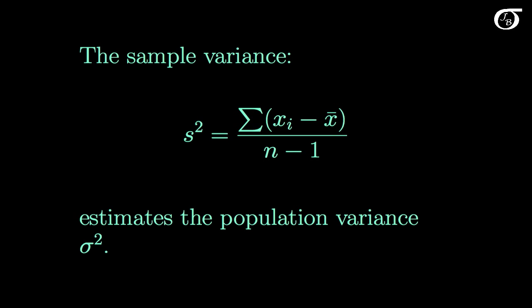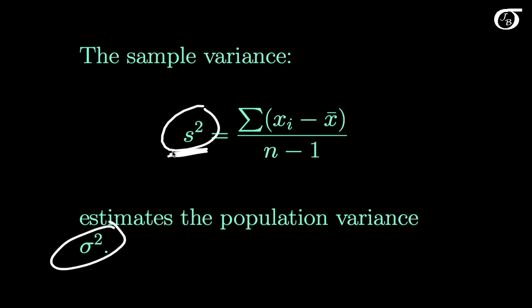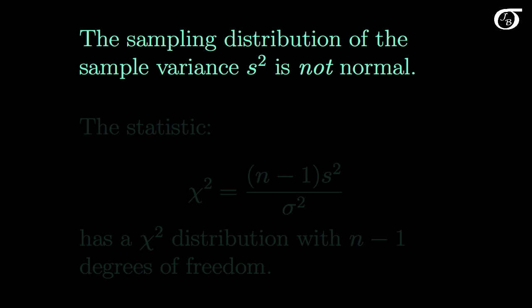Recall the formula for the sample variance S squared. S squared, the sample variance, is going to estimate the population variance sigma squared. The point estimate we eventually get for S squared — some value like 1.2 or 28.8 — will provide us with a point estimate of sigma squared. But in the stats world that's not quite enough; we would like to have a confidence interval for sigma squared. We have to approach these confidence intervals a little differently because the sampling distribution of S squared is not normal.